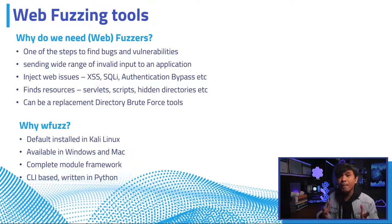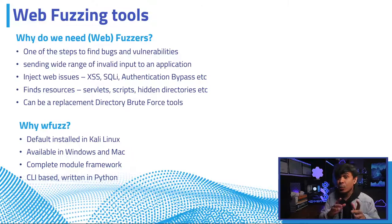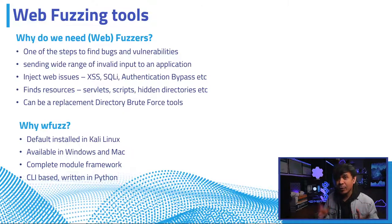wfuzz is one of the most common web fuzzing tools for finding and exploiting web application vulnerabilities. It's available in Kali Linux by default, but you can also install it on Windows or Mac. It's a complete modular framework written in Python, and it's easy to integrate its output with other tools or custom scripts.